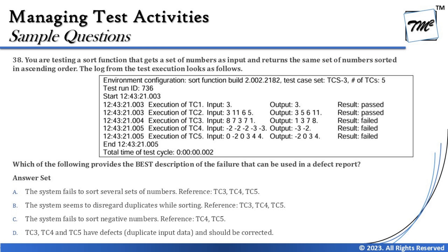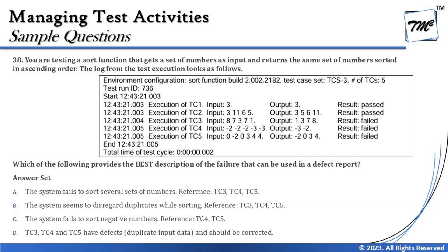TC4: input minus 2, minus 2, minus 2, minus 3 — output minus 3, minus 2 — the sorting of negatives is correct based on the number line, but duplicate values are again dropped. TC5: input 0, minus 2, 0, 3, 4, 4 — output minus 2, 0, 3, 4 — ascending order is correct but duplicates are again missing. The question asks: which of the following provides the best description of the failure that can be used in a defect log? The key here is what information would best help a developer understand and fix the issue.